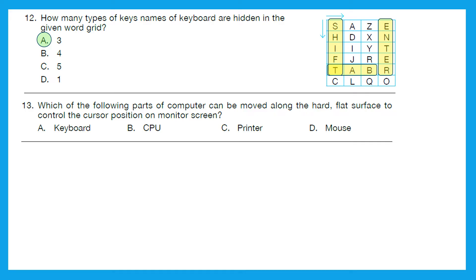Question 13: Which of the following parts of computer can be moved along the hard flat surface to control the cursor position on monitor screen? It is very easy. Which part controls the cursor position on monitor screen? Is it keyboard, CPU, printer, or mouse? Option D, mouse is the right answer.